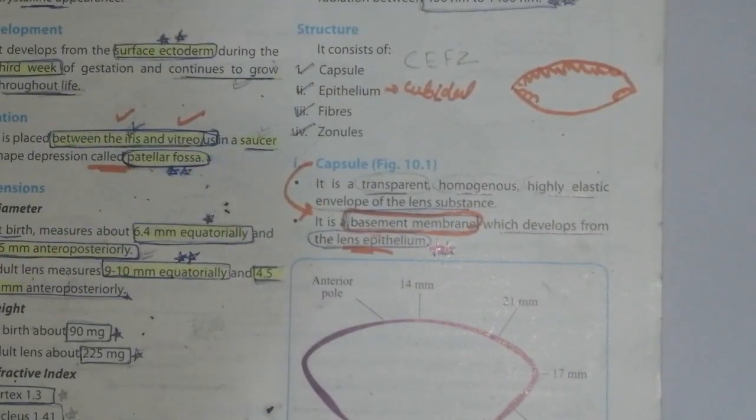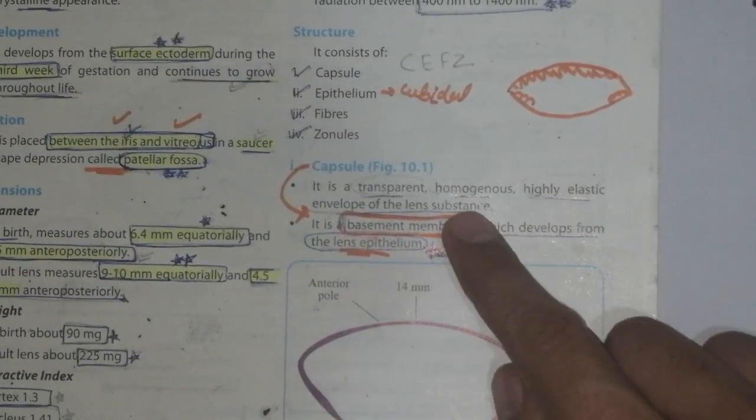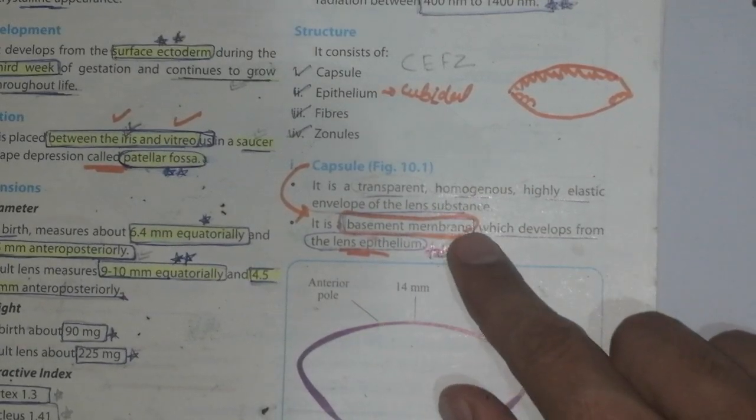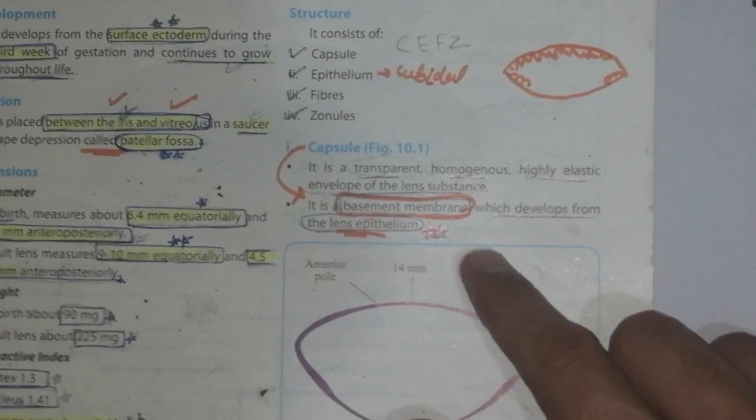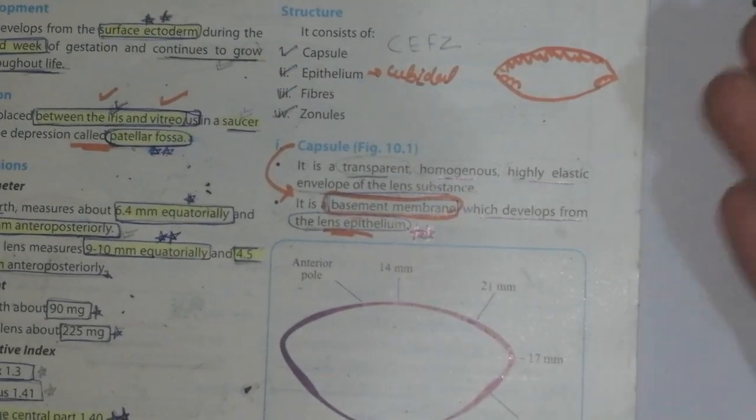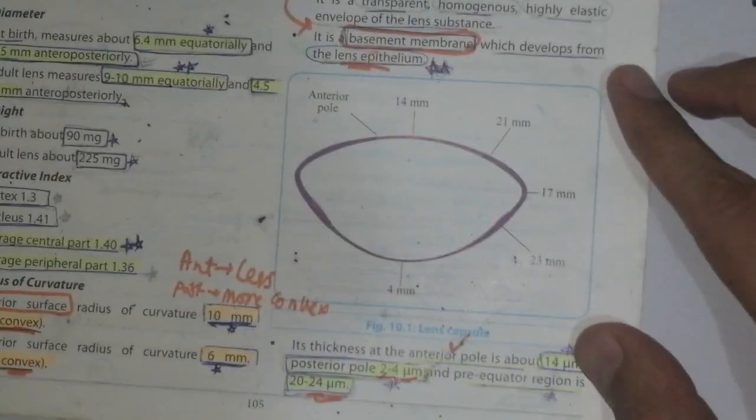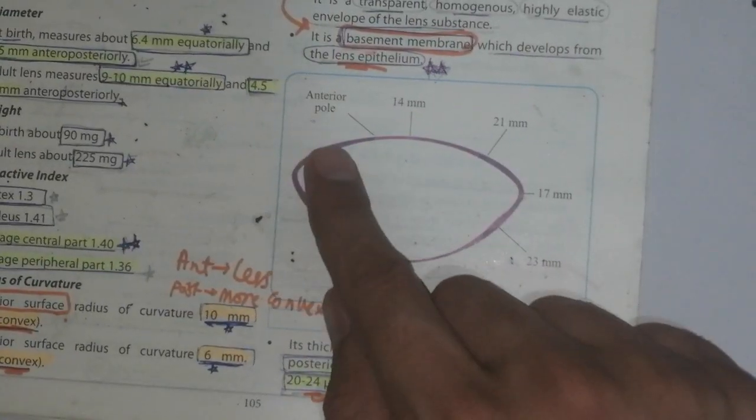Capsule: What is capsule? It is the transparent, homogeneous, highly elastic envelope of the lens substance. It is the basement membrane which develops from the lens epithelium.